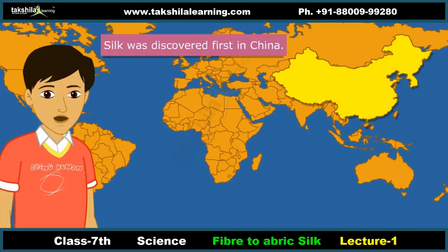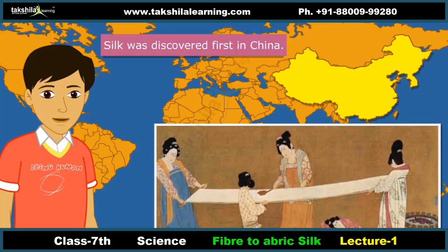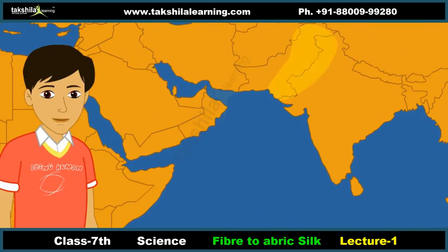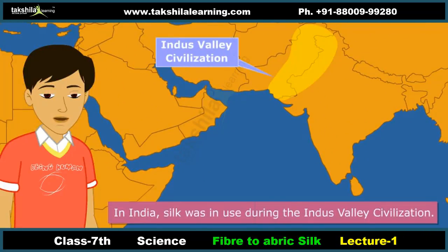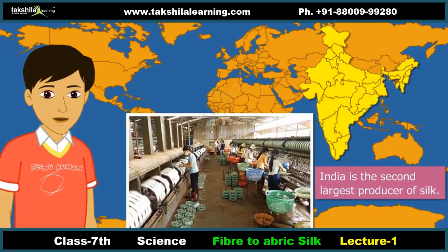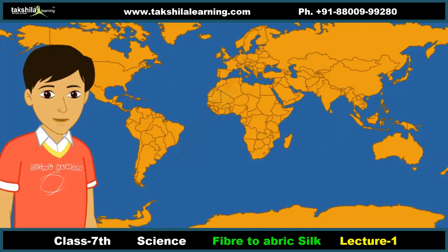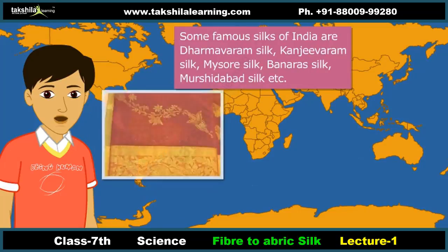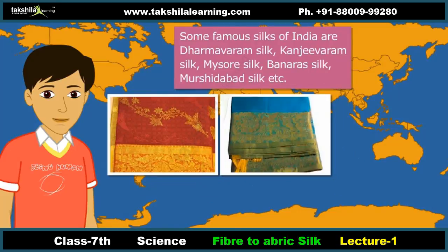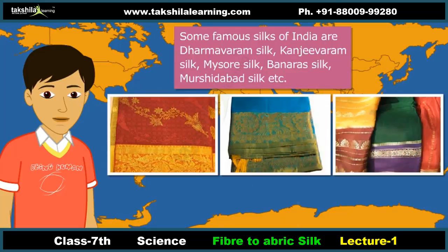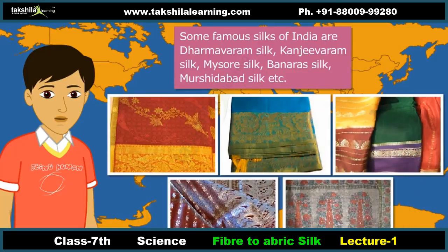Silk was first discovered in China by a Chinese emperor as far back as 3500 BC. In India there is evidence that silk was in use during the Indus Valley civilization. Today India is the second largest producer of silk; bulk of it is produced in Karnataka. India is also the largest consumer of silk in the world. Some famous silks of India are Dharmavaram silk, Kanchivaram silk, Mysore silk, Banaras silk, and Murshidabad silk.